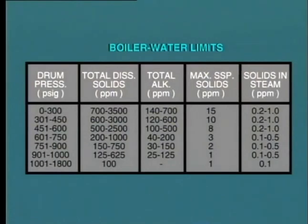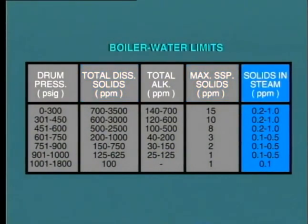Where boiler water contains a high concentration of solids, you should expect frequent tube failures, with the resultant need to take the boiler out of service for repairs. In order to prevent this problem as far as possible, limits are established on the allowable concentration of solids in the boiler water. This table indicates limits for both dissolved solids and suspended solids. The problem of scaling is aggravated at higher steam pressure because of the higher saturation temperature of the water. Therefore, as we see here, the permitted limit of concentration is much lower when the boiler operates at higher steam pressure.